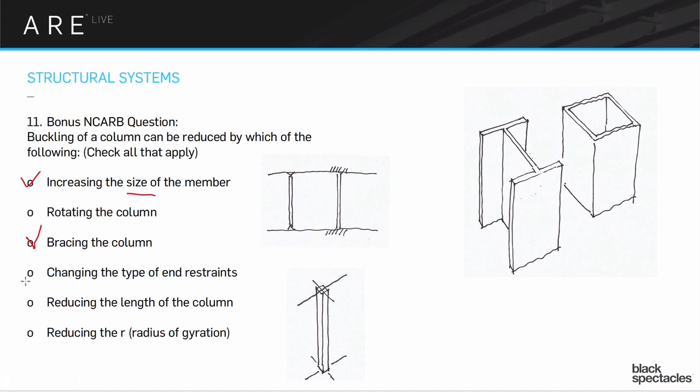Changing the type of end restraints, that's also probably going to be very helpful. Reducing the length of the column, well, that's going to be hugely helpful. Reducing the R, the radius of gyration, actually that one's sort of a little trick. You would want to be increasing the R for that to be useful.